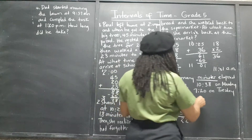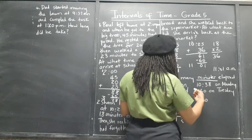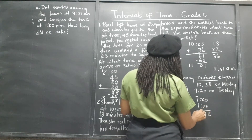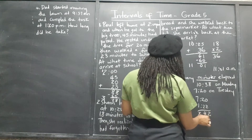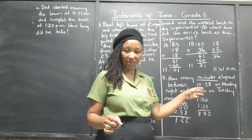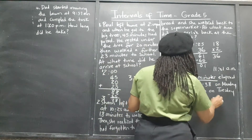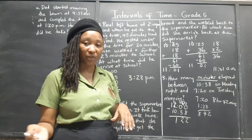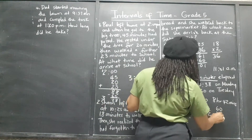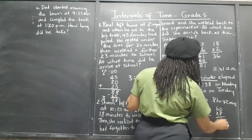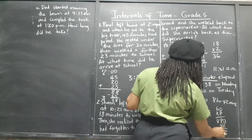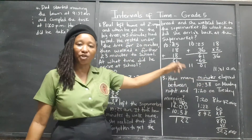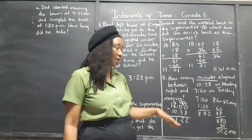We add that 1 hour 22 minutes to the 7 hours 20 minutes from midnight to 7:20 AM. That gives 8 hours and 42 minutes. But they want it all in minutes. 8 hours and 42 minutes — the 8 hours is 8 times 60, which is 480 minutes, plus the 42 minutes, equals 522 minutes. That's the answer because they said they wanted it just in minutes.